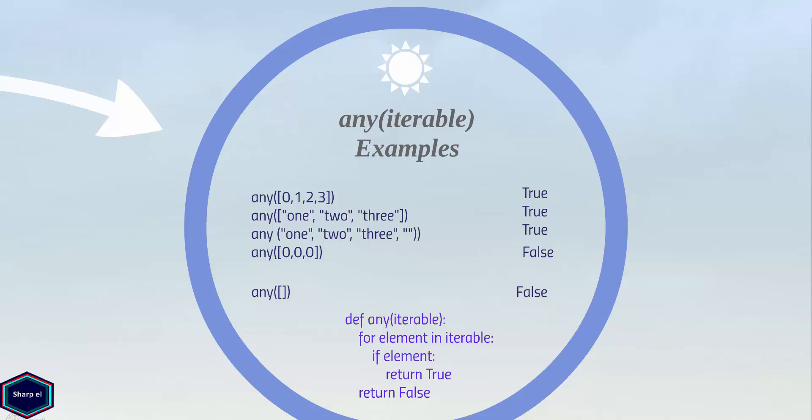But what if we pass an empty list like we did in function all? As you can see the implementation of any function, I think you can easily find the answer. Since there is no element in an empty list, any function will return false.